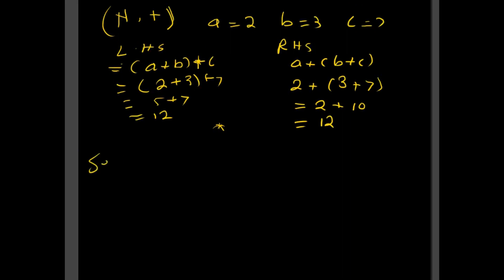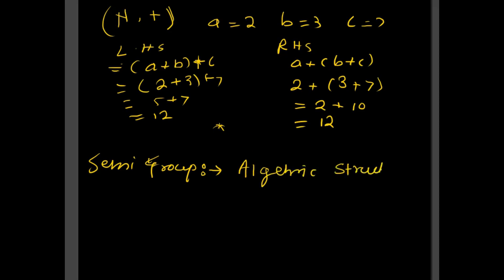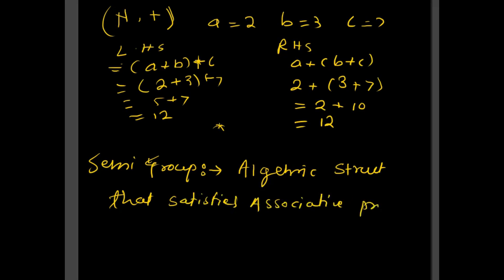Now let us define the semi-group. A semi-group is an algebraic structure that satisfies both the closure property and the associative property. An algebraic structure that satisfies the associative property is called a semi-group.